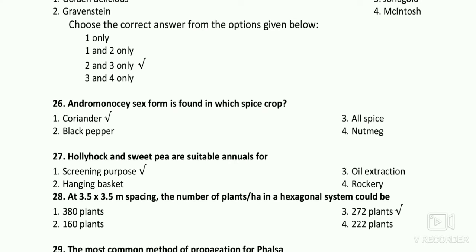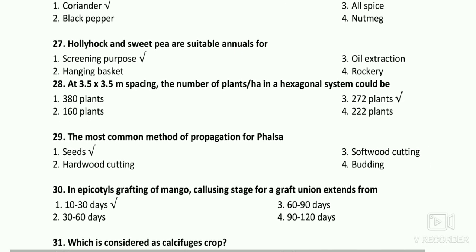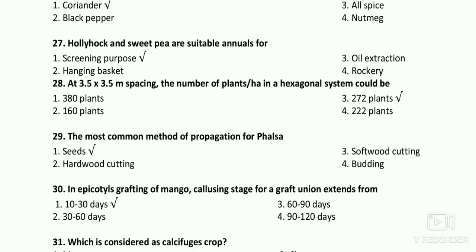Andromonoecious sex form is found in which spice crop? The answer is coriander — a common question. For screening purpose with Hollyhock and sweet peas at 3.3 m spacing, calculate plants per hectare in hexagonal system using Jitain Singh's Basic Horticulture. The most common method of propagation for Phalsa — according to the options, the answer is seeds; but for research purposes, hardwood cuttings are used to maintain clonal uniformity.